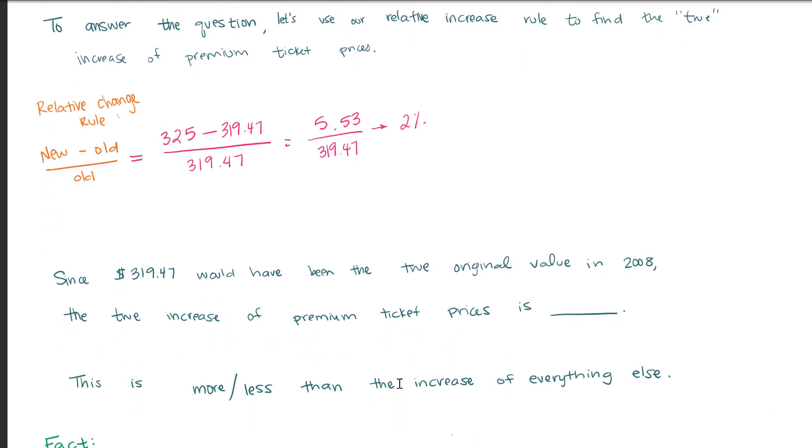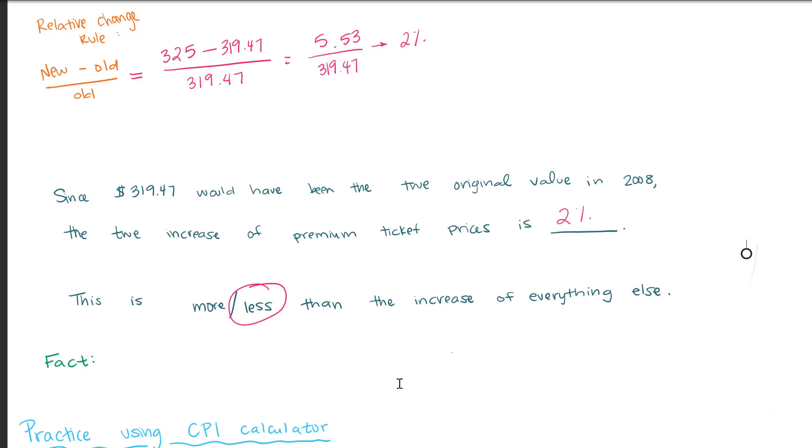So again, $319.47 is what the premium seats should have been worth in 2008 after inflation. Now, because there was an increase, what we have shown is that there was a 2% increase in these ticket prices. So is this more or less than the increase in prices on everything else around that time period? What we're going to see is that this is actually less, because items that are worth a lot, they are not affected as much by inflation as items that are priced at a lower value.